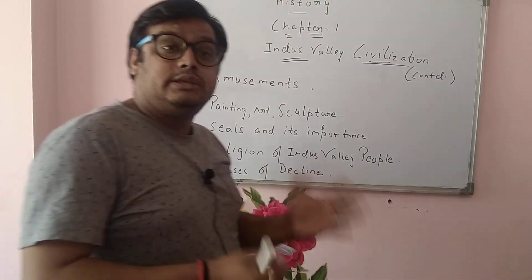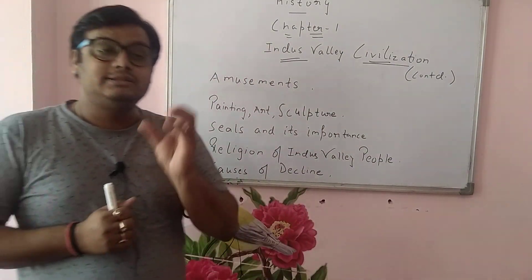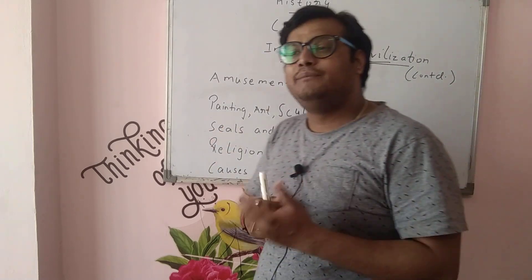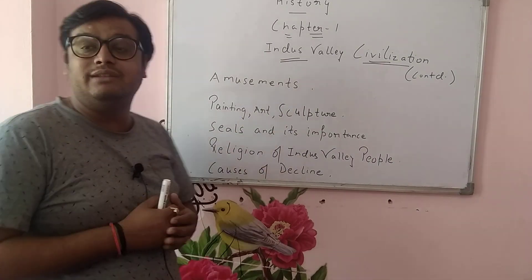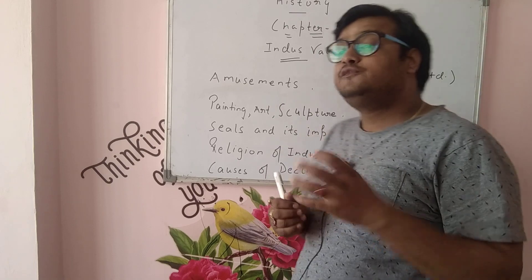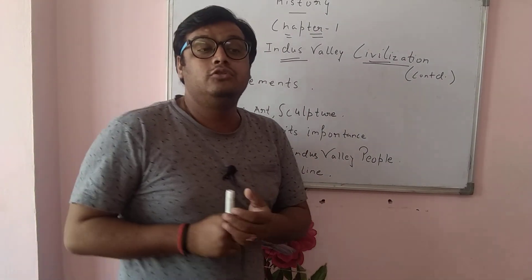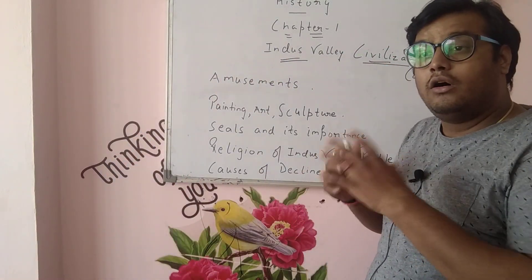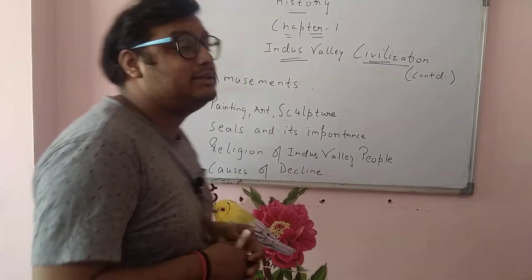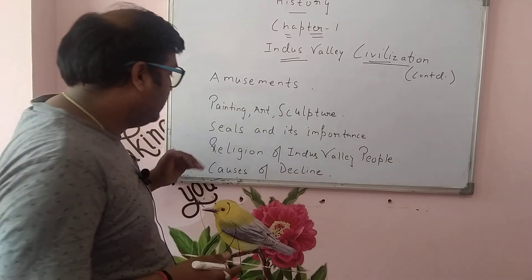Next we'll talk about seals. Seals are very important things which tell us much about the Indus Valley people. We found various clay tablets, circular in shape, known as seals. These seals are considered to have been used for trade purposes. Various seals were found, such as the bison seal. The most prominent seal was the Pashupati seal. Lord Shiva is known as Pashupati, lord of all wild animals, which is why the Pashupati seal is the most important. Indians had a good trade relationship with Western Asian countries.